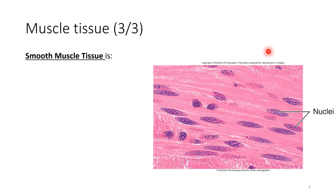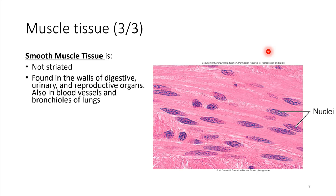Our third type of muscle tissue is smooth muscle tissue. It's called smooth because it looks smooth — there are no striations, and none of those banding patterns show up under a microscope. Smooth muscle tissue is found in many different places throughout the body, typically in the walls of organs that require movement, such as the stomach and small intestine, which need to contract to move food along.